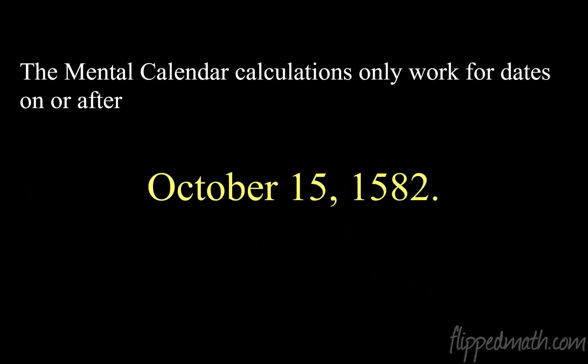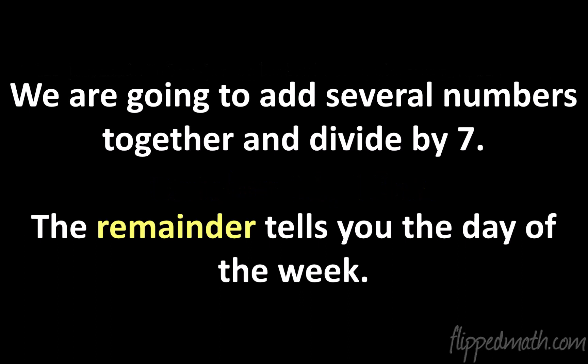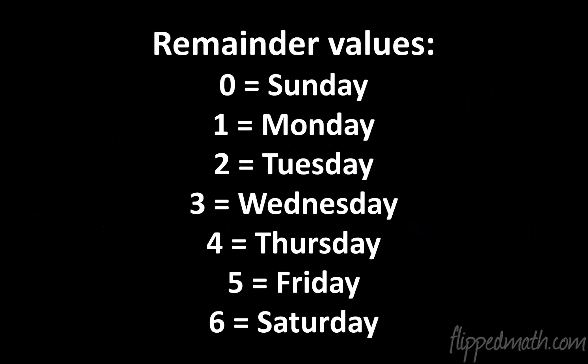Okay, so now as a reminder, this only works for days on October 15th, 1582 and on. So what we'll be doing today is we're going to add up some numbers, divide by seven, and then the remainder tells you the day of the week. So we add up a whole bunch of numbers, whatever the remainder is after dividing by seven tells you the day of the week of that date.